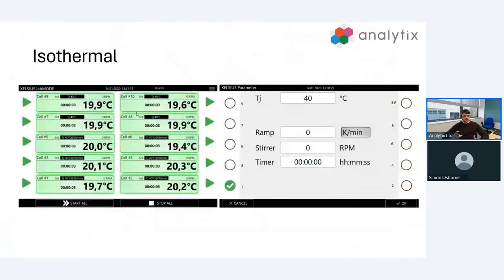We have two principal modes of operation with Excelsis: isothermal methods and ramp cycles. First I'm going to cover isothermal methods. On the left you can see our starting screen for Excelsis. You can see all 10 cells and the temperature at which they're currently at. This gives us mass control of all cells.